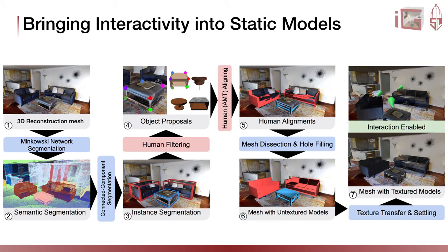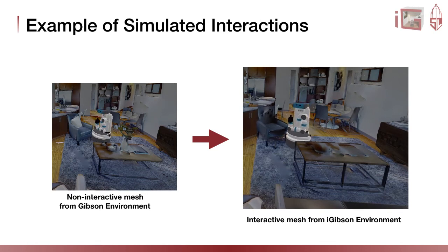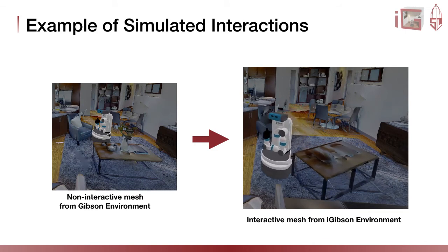At the end of our process, we obtain a model where the robot can freely interact with the elements. Here is a comparison between the original non-interactive meshes and the interactive models resulting from our annotation pipeline. In the first Gibson environment, the robot would slide to continue navigation. In the iGibson environment, objects react to the robot's interaction in a more realistic manner. Additionally, the quality of the model improves as we replace the partial scans with complete CAD models, at the cost of losing some fine details such as objects on the table.